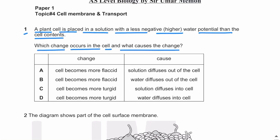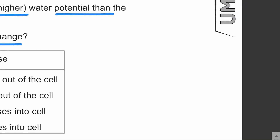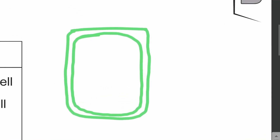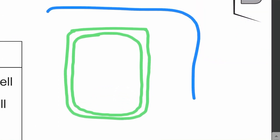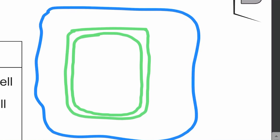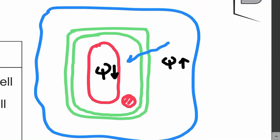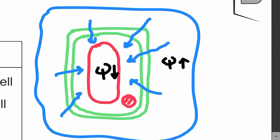They are saying there is a plant cell placed in a solution with a higher water potential — or less negative water potential. So the solution has a higher water potential, and inside the plant cell there is a lower water potential. Water in this case will enter into the cell from the solution, from higher water potential to lower water potential, by osmosis. This will cause the cell to become turgid.